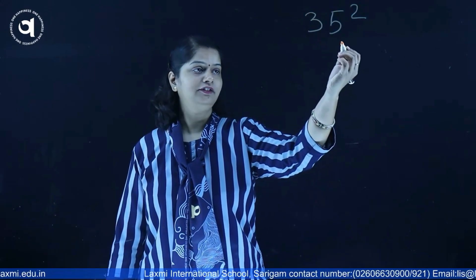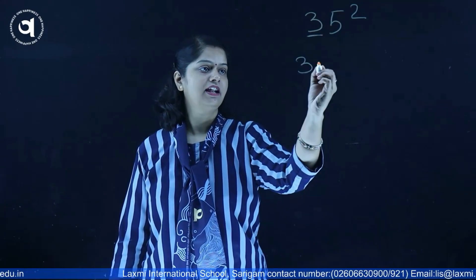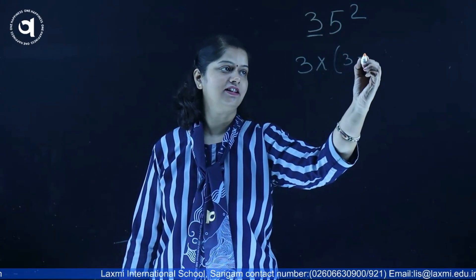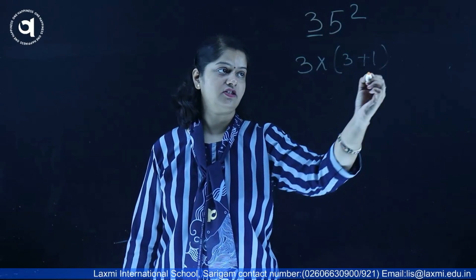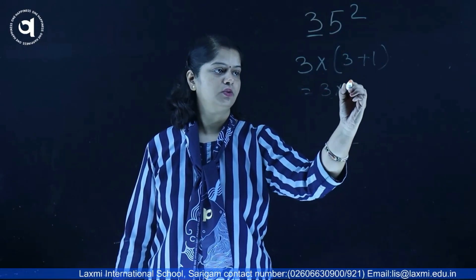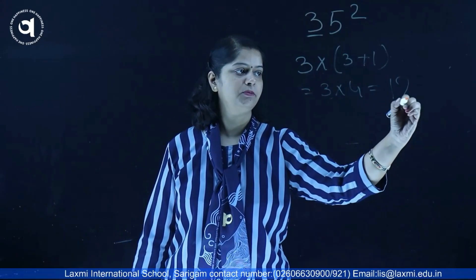Isn't it easy? Now let us take another example. Let us find the square of 35. Again, we have to take the first number and just multiply it with its successor. So the successor of 3 is 4. So 3 into 4, that is coming 12.